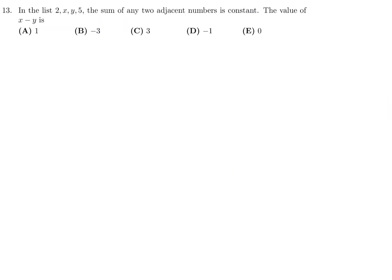The list 2, x, y, 5. The sum of any two adjacent numbers is constant. The value of x minus y is. So the sum of any two, whether it's that plus that, that plus that, or that plus that, is the same. So that basically means that 2 plus x is the same as x plus y, is the same as y plus 5.